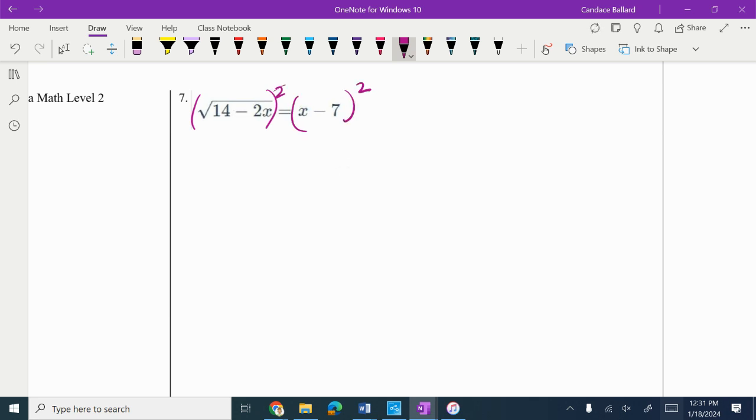We know that the square and the square root cancel, so we've got 14 minus 2x on the left. And we know squared means we need to write it twice.